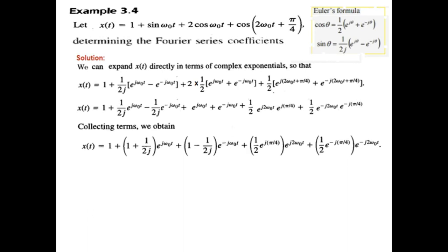Then we just open it up everything. And now we collect the like terms. So same terms j omega t here and j omega t here collected together. E minus j omega t, E minus j omega t collected here.